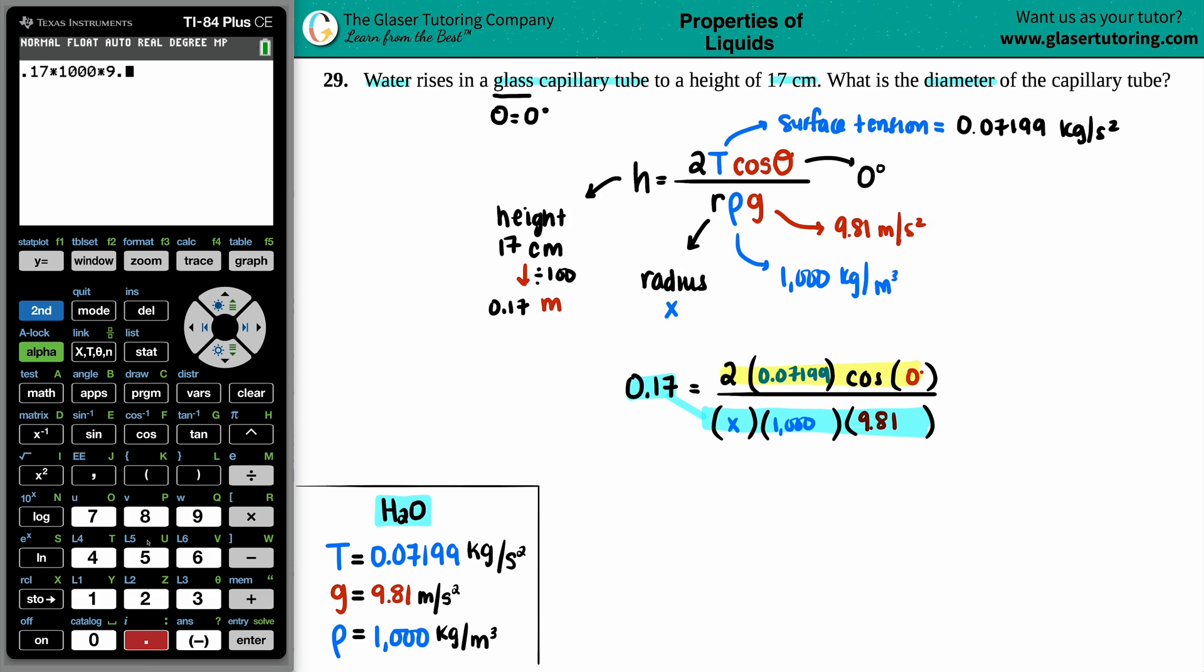And I get one thousand six hundred sixty seven point seven, and that has the x in it. And now this is going to equal, let's just simplify the numerator. So two times point zero seven one nine nine times the cosine of zero, you close the parentheses. Just making sure that all the numbers are right. That looks good: zero point one four three nine eight.